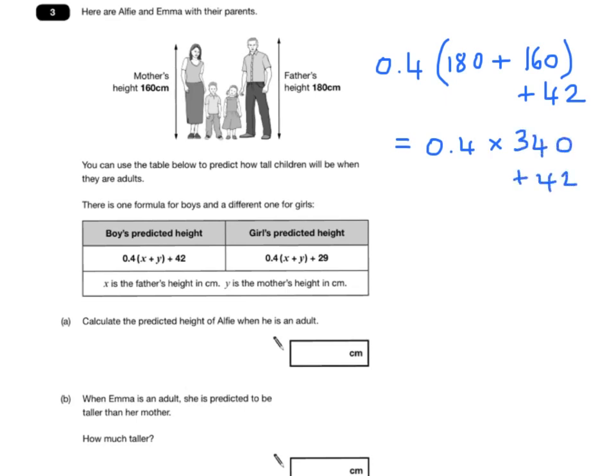340, which is 180 plus 160, you could keep that in brackets, plus 42. So, Alfie's predicted height is going to be 136 plus 42, which is 178 centimetres.